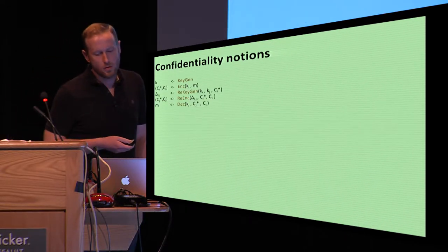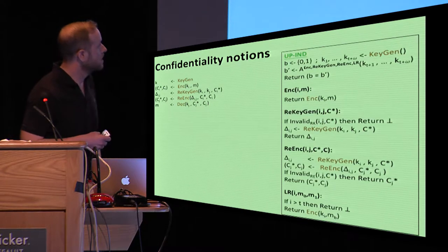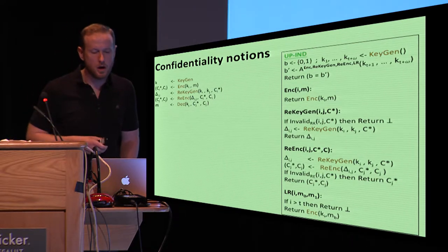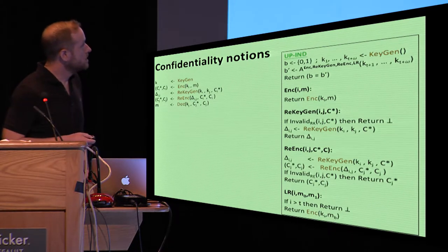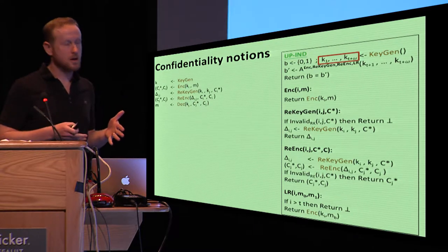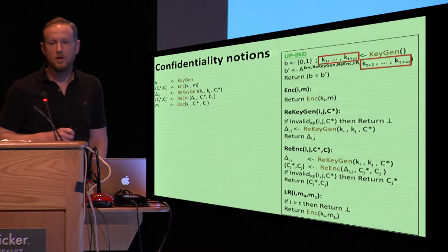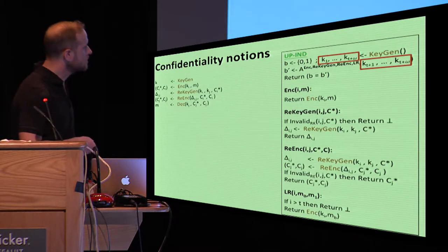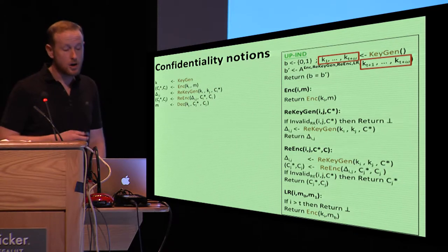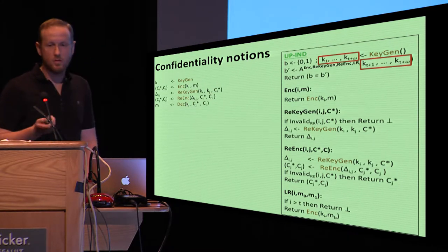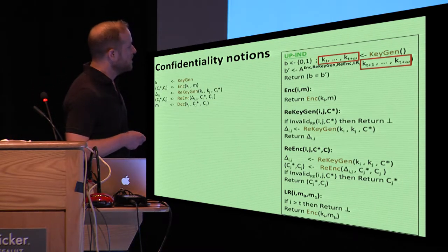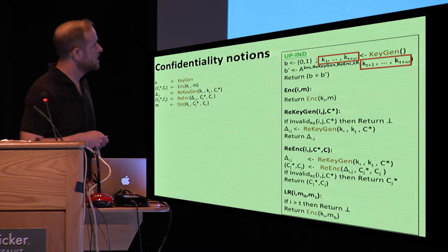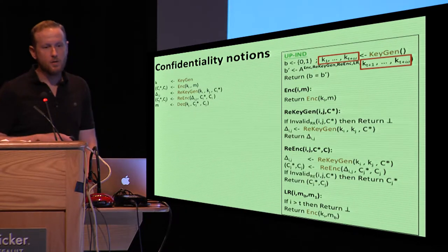In terms of confidentiality, we introduce a new kind of class of definitions, all based on a relatively complicated, at least looking, security game called UPIND. This is a kind of left or right indistinguishability notion for chosen plaintext attacks. We generate a bunch of different keys, in fact there's two sets of keys, ones that are going to be uncompromised, and then ones that are actually explicitly handed over directly to the attacker. The goal of the adversary is to query a challenge LR oracle here at the bottom with two messages to one of the uncompromised keys, and get back an encryption of one of the two messages chosen at random, and try to figure out what this bit B is. Additionally, the adversary has access to all these other oracles, like a regular encryption oracle to get examples of encryptions that aren't challenge encryptions, re-key generation, and re-encryptions.